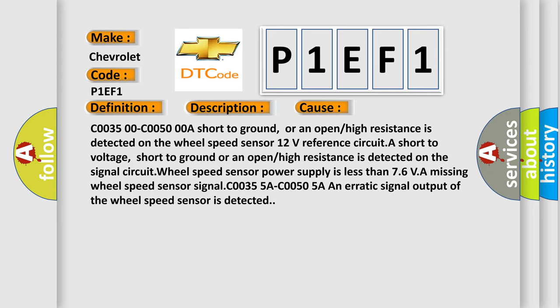The wheel speed sensor power supply is less than 7.6V, a missing wheel speed sensor signal C0035 5A C0050 5A, or an erratic signal output of the wheel speed sensor is detected.